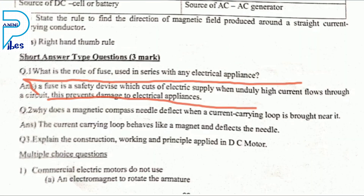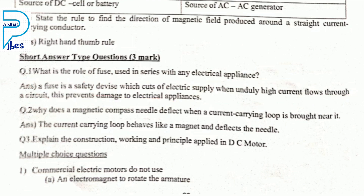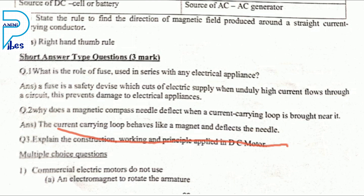What is the role of the fuse? A fuse is a safety device which cuts off electric supply when an unduly high current flows through a circuit. Why does a magnetic compass needle deflect when a current-carrying loop is brought near it? The current-carrying loop behaves like a magnet and deflects the needle.